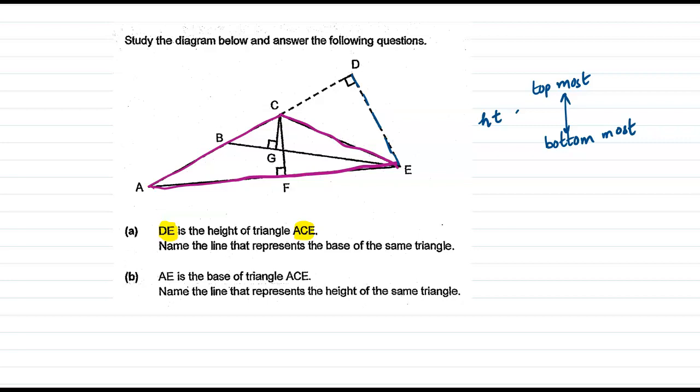Now if DE is the height, that means E is the topmost point and the bottom most point is D. Now if this D is not a point on the triangle, if I take it back and move along the line which is drawn from D, I see that AC, which is a side of the triangle, has been extended till point D.